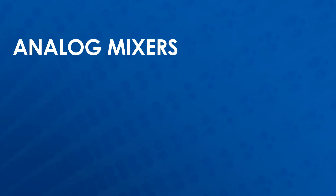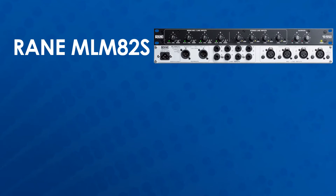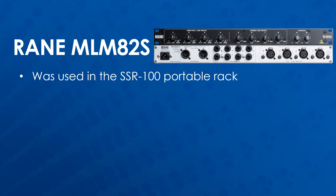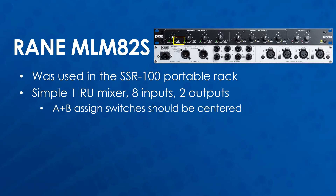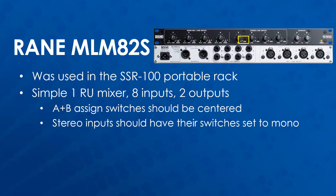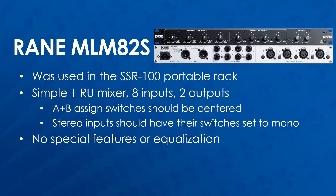Analog mixers are most commonly found in the SSR100 and SSR200 racks. The Rain MLM82S was used in the SSR100 portable rack. It is a simple 1RU mixer with 8 inputs and 2 outputs. The ABS-Sign or output select switches should be centered in most systems, which sends that input to both outputs. The stereo inputs should generally have their switches set to mono, lighting up the mono LED and sending the line inputs to both outputs. The Rain has no special features or equalization and only adjusts source volumes and output levels.